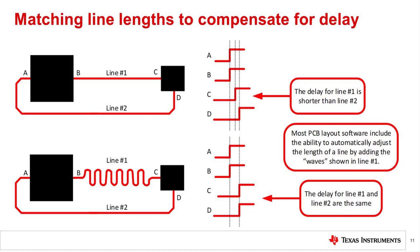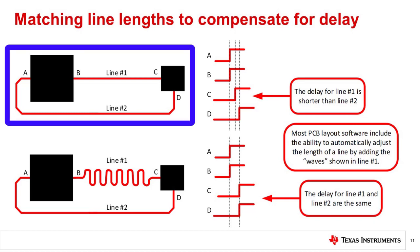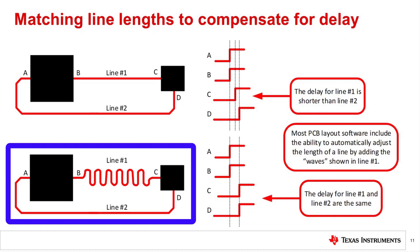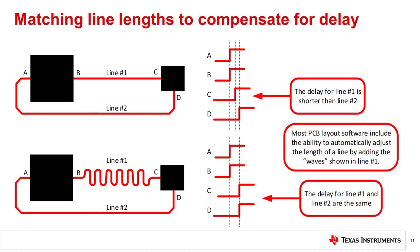One way to correct for the different lengths is to use a serpentine trace to make the shorter traces longer. In the example shown, line 2 is longer than line 1. This introduces a different delay between the short and long lines. Making line 1 longer using a serpentine PCB trace matches the delay between the two paths. Many PCB trace layout programs provide automated approaches to matching length. This short introduction here is just intended to familiarize you with the subject. There are many resources that cover the details of when this is needed and how to do it.